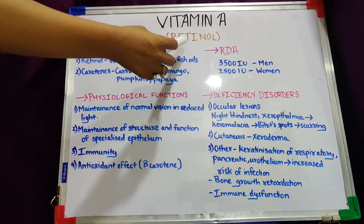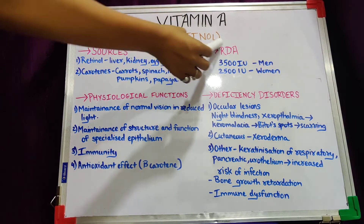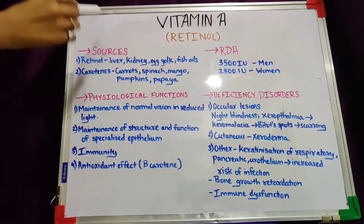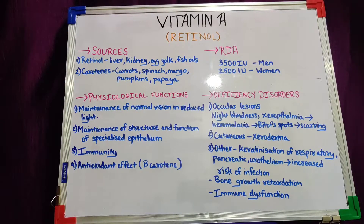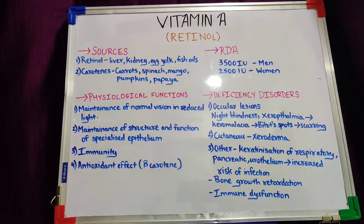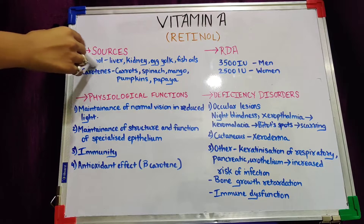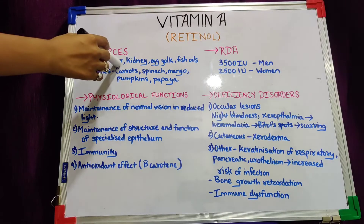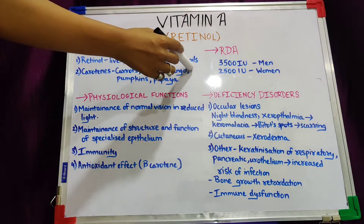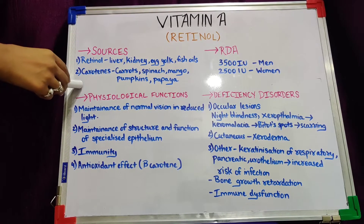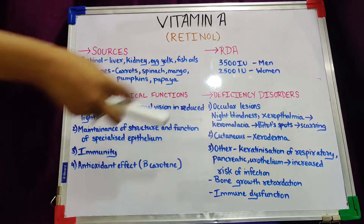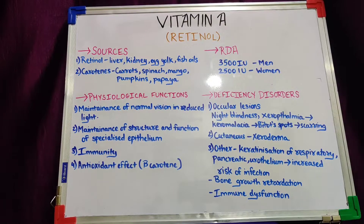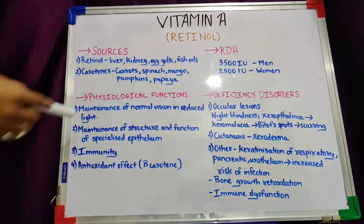The biochemical name of vitamin A is retinol. There are two sources: first, direct retinol supplied from food sources, and second, carotene, which is the precursor of vitamin A and gets converted to vitamin A inside the body. Sources of retinol include liver, kidney, egg yolk, and fish oils. Sources of carotene include carrots, spinach, mango, pumpkins, and papaya.